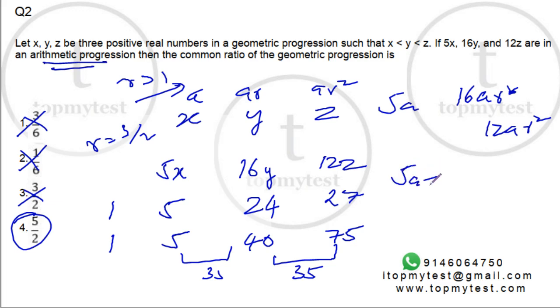So 5a plus 12ar square by 2 should be equal to 16ar. You can solve for r and find using this. I prefer using the options here because two options are already eliminated. So that completes this particular question.